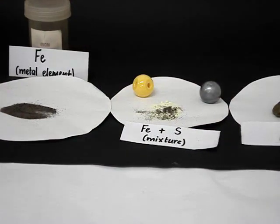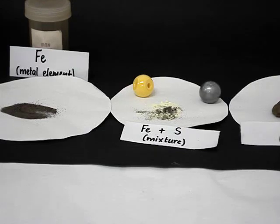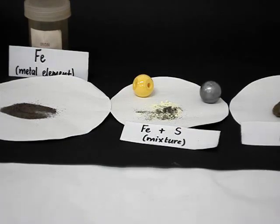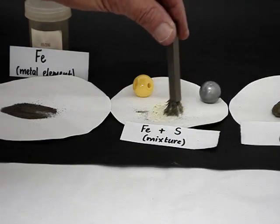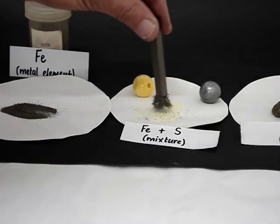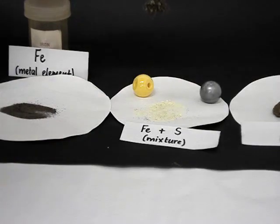Consequently, it's easy to separate the two components of the mixture. For example, we could use a magnet. We make use of the physical difference between these two. We place a magnet nearby and the iron will be attracted but the sulfur remains where it is, and that way we can separate the mixture into its components.